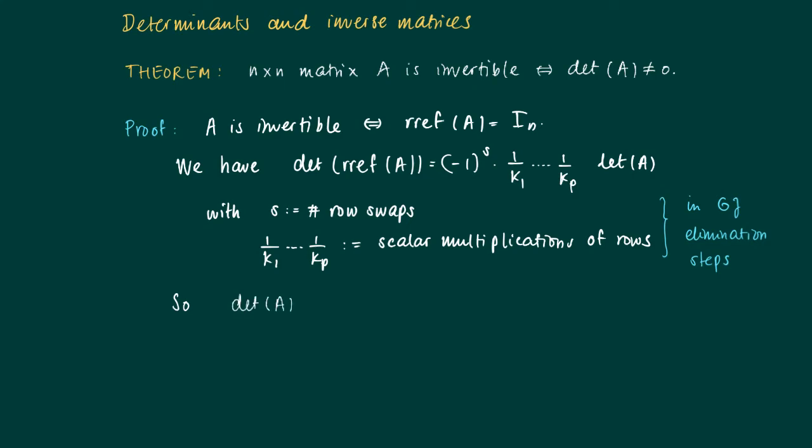The determinant of A now equals (-1)^S times k1, k2, ... kp times the determinant of the row reduced echelon form.